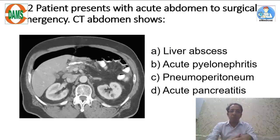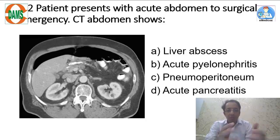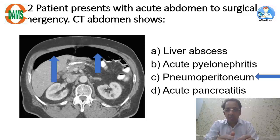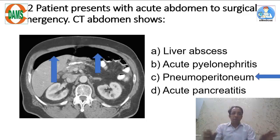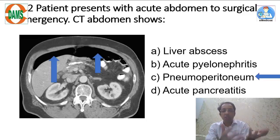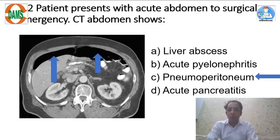Next is a clinical vignette with a patient presenting with acute abdomen. Look at the top of this image — the arrows are pointing to free air, a collection of free air below the anterior abdominal wall. Air rises up, and when a CT is done with the patient supine, you can see the air collection behind the anterior abdominal wall, indicating pneumoperitoneum.